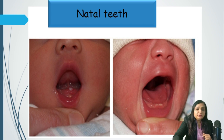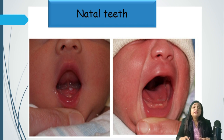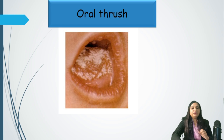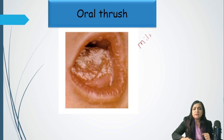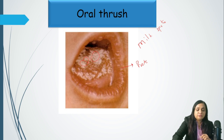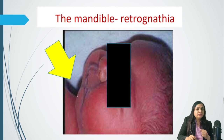Natal teeth could be disturbing for parents — if firm and not disturbing breastfeeding, nothing needs to be done; if loose and hanging, a pedodontist's opinion should be taken. Oral thrush means the oral cavity is covered with a white membrane — milk spots can be easily removed without bleeding, but oral thrush may bleed when removed. This could be a part of opportunistic infection seen in preterm babies or babies born to HIV-positive mothers. After looking at the oral cavity, we need to see the mandible — a very small mandible located posteriorly is called micrognathia or retrognathia.